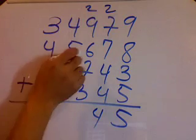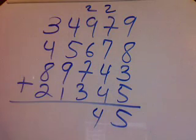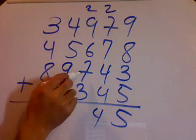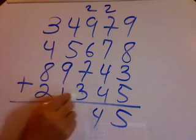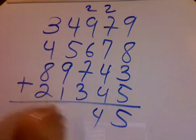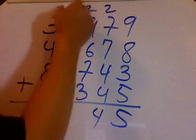Then 2 and 9 is 11, plus 6 is 17, plus 7 is 24, plus 3 is 27.